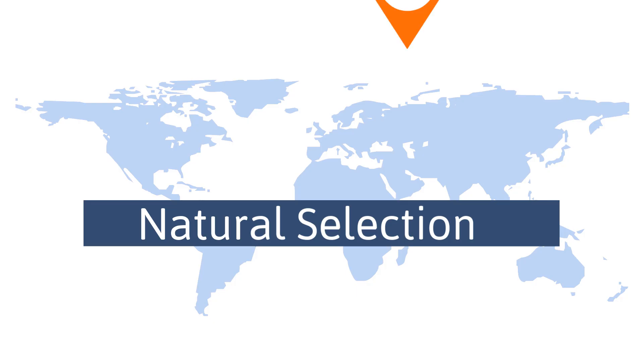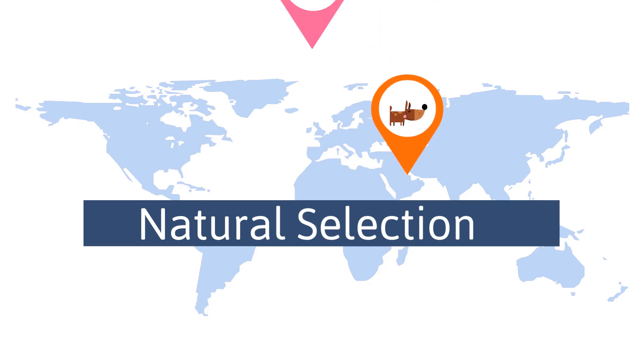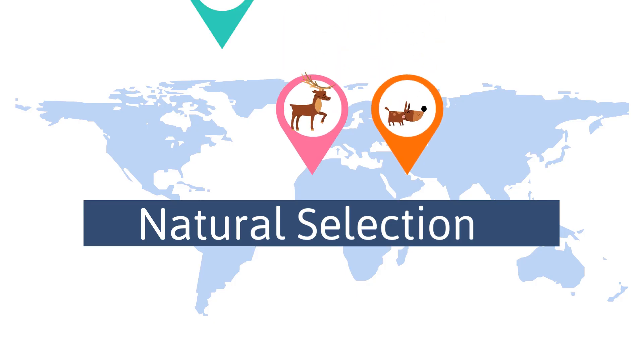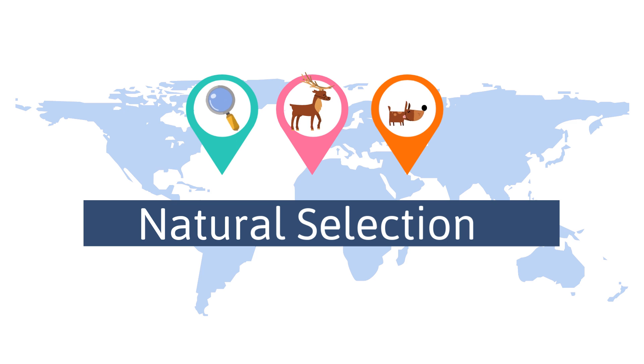So there we go — natural selection, one way Darwin helped explain his theory of evolution.